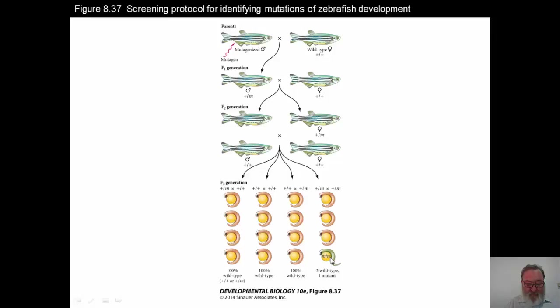Furthermore, since zebrafish development occurs in the open and the embryos are transparent, you can follow and detect mutations very readily, unlike you would be able to do in something like a mammal or a chick. In the case of the zebrafish, you can look through a microscope, pick out a mutation readily in the heart, liver, or some internal organ, and be able to pick those out at a very early stage to do various kinds of analyses.